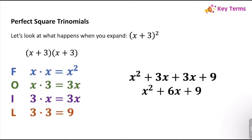Let's look at what happens when you expand (x + 3)². We know that this becomes (x + 3)(x + 3). Using FOIL: first times first is x², outside is x times 3 which is 3x, inside is 3 times x which is 3x, and last times last is 3 times 3 which is 9. Adding all terms gives us x² + 3x + 3x + 9, and combining the like terms gives us x² + 6x + 9.